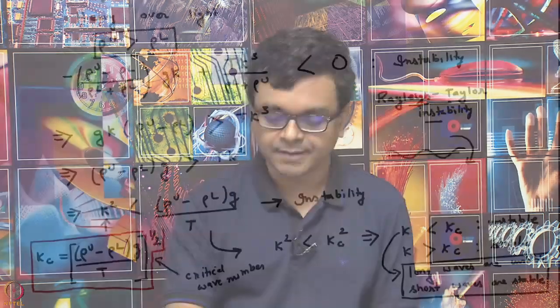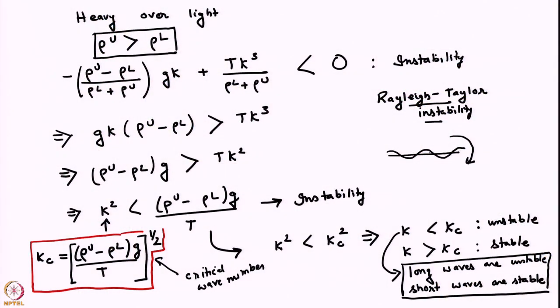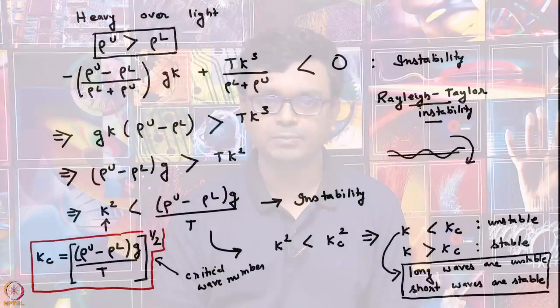This is the Rayleigh-Taylor instability. In the heavy over light configuration, some modes are stable and will oscillate, while other modes are unstable and will bring the heavier fluid below and the lighter fluid above. In the reverse configuration — heavier fluid below and lighter fluid above — all modes are stable.